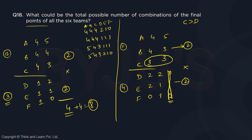So the four cases when bottom has 4 points are: 4, 4, 3 with 2, 2, 0; 4, 4, 3 with 2, 1, 1; 5, 3, 3 with 2, 2, 0; and 5, 3, 3 with 2, 1, 1. Adding both groups: 4 + 4 = 8 total ways in which points can be distributed. That is question 18.